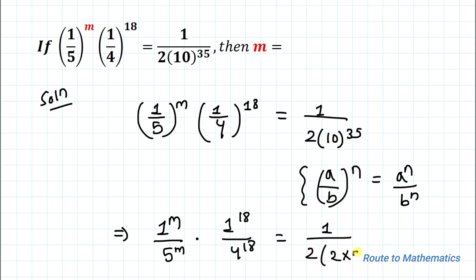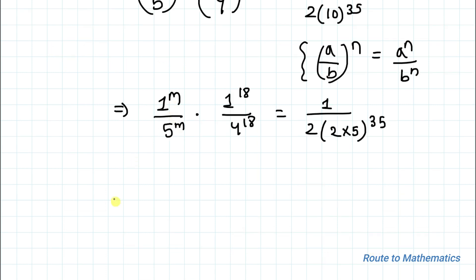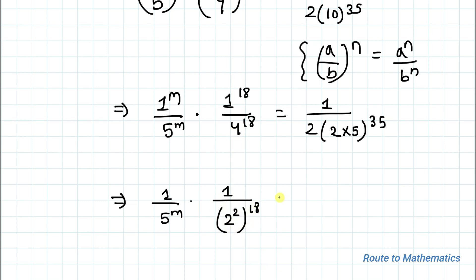Now, 10 can be written as (2 × 5), so the right side becomes (2 × 5) to the power 35. Also, 1 to the power of anything is 1, so we get 1 by 5 to the power m, multiplied with 1 by (2 squared) to the power 18, equals 1/2 multiplied with (2 × 5) to the power 35.